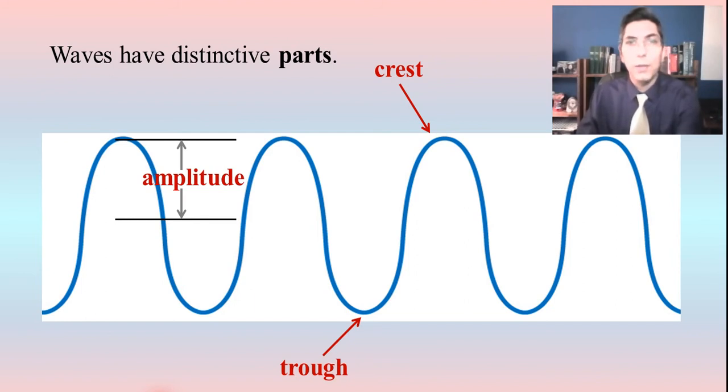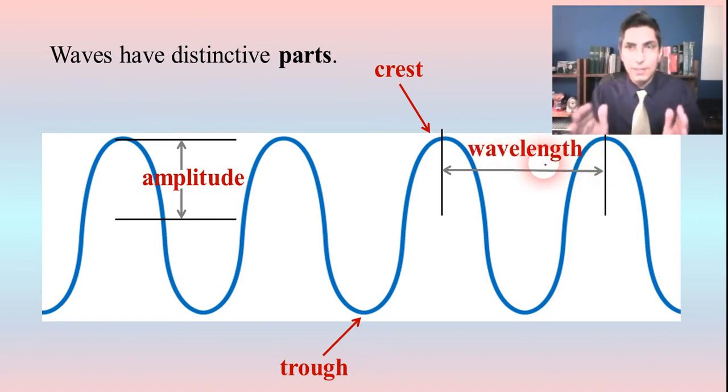Also, we can talk about the distance from one crest to the next crest on a wave. And that's called the wavelength. And so that's a certain distance. That's just the distance from one point on a wave to the same point on the next wave. So there we have the wavelength. We have amplitude, crest, and the trough. So those are some very important parts of the wave that you need to be familiar with as far as the vocabulary goes here.